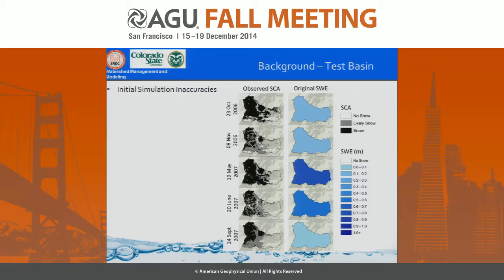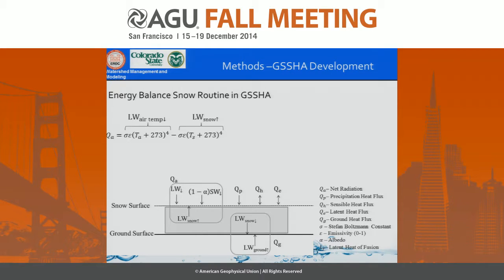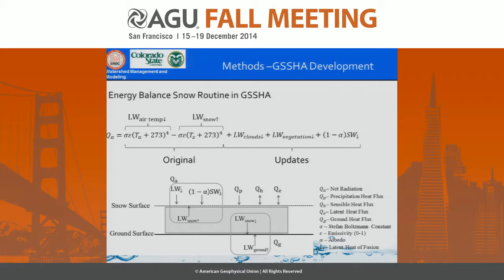We stepped back and revisited the energy equation. Net radiation is one of the more dominating factors, so we decided to focus on that. The original snow energy balance routine looked only at air temperature and snow temperature to calculate net radiation — it ignored shortwave radiation altogether. We decided to improve the model by including longwave radiation downward from clouds and vegetation, as well as a shortwave radiation model, and also updated the longwave downward from temperature.